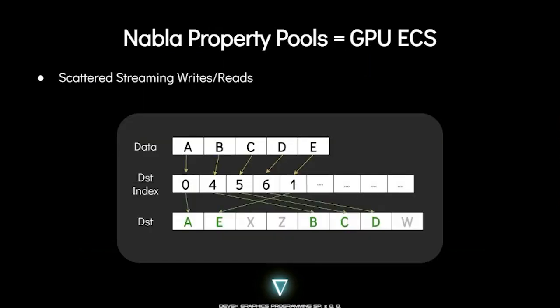We have other similar systems in NABLA such as property pools, which you can think of as GPU ECS. Our property pools follow the same pattern with regards to auto submission and the transient data streaming buffer. The only difference is using a compute shader to write data instead of a command buffer command, with an additional index buffer.